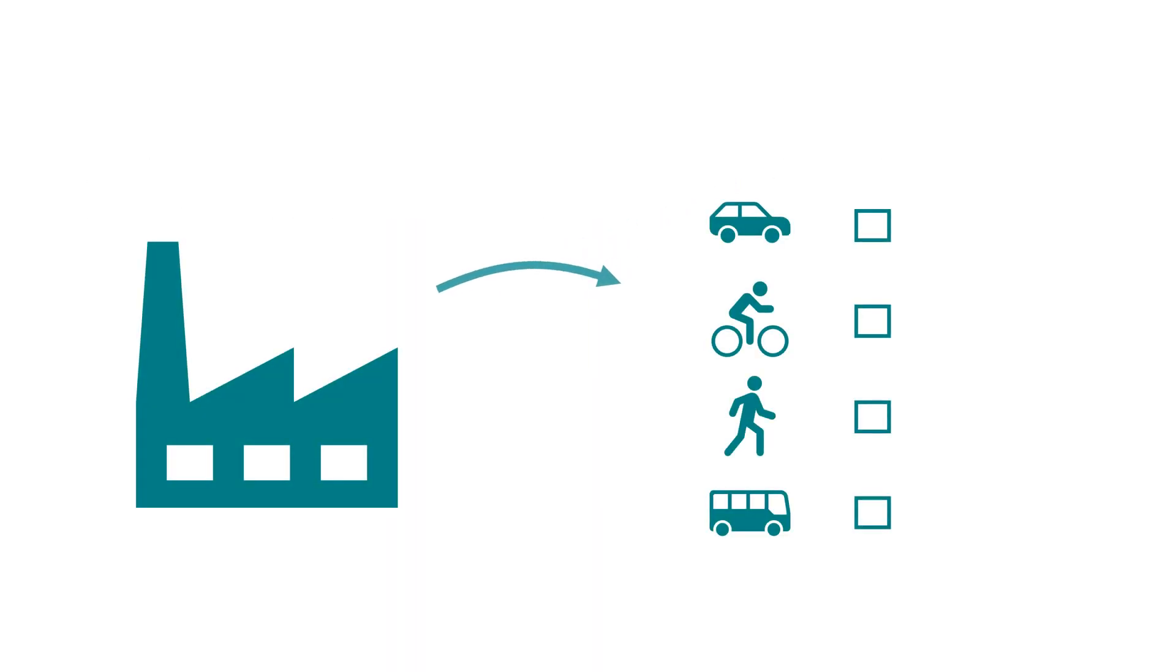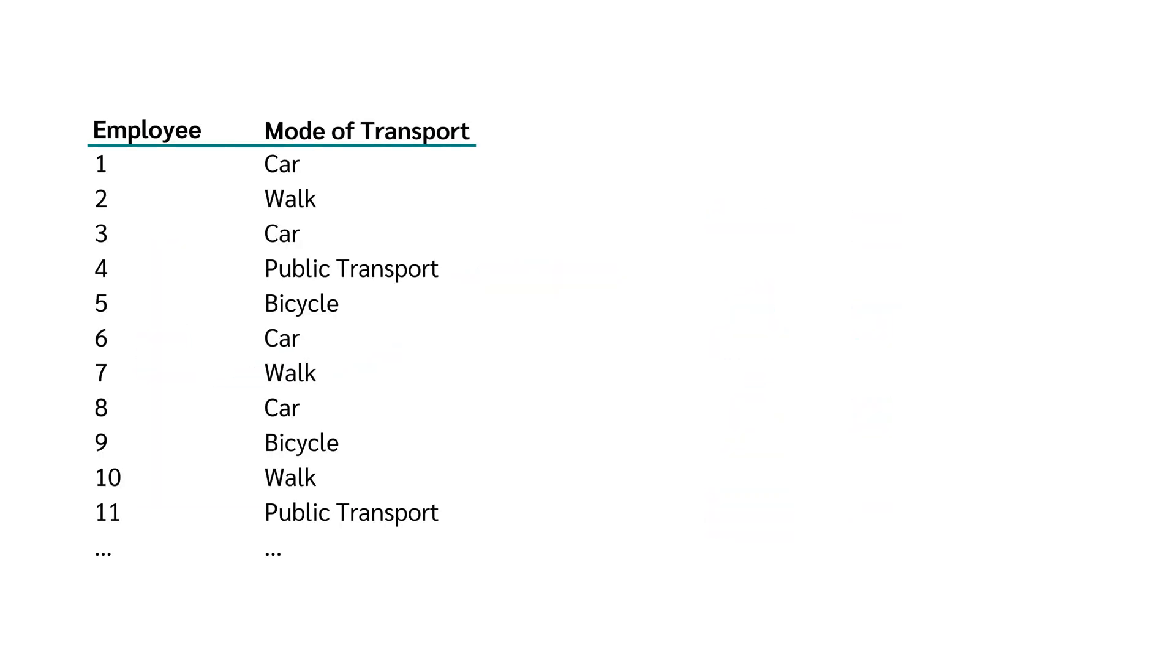Let's have a closer look at the example from the beginning. A company surveyed its employees to find out how they get to work. The options given were car, bicycle, walk, and public transport.